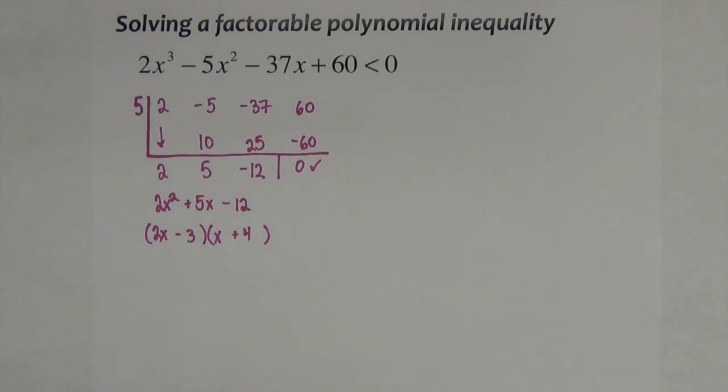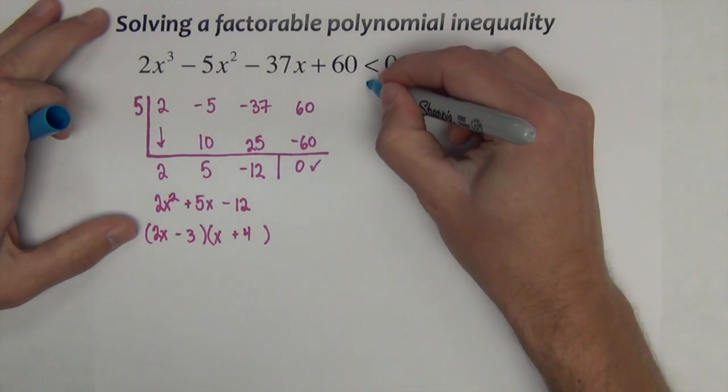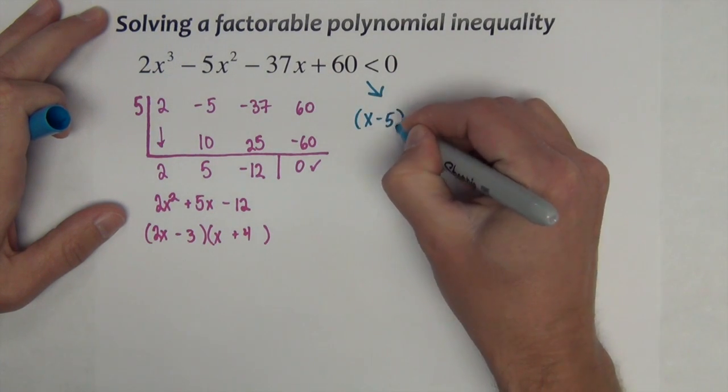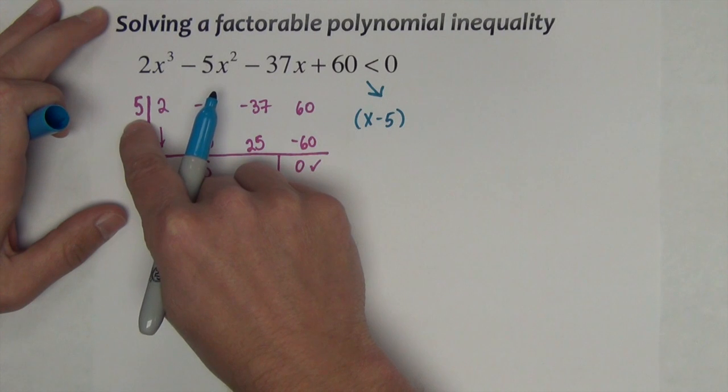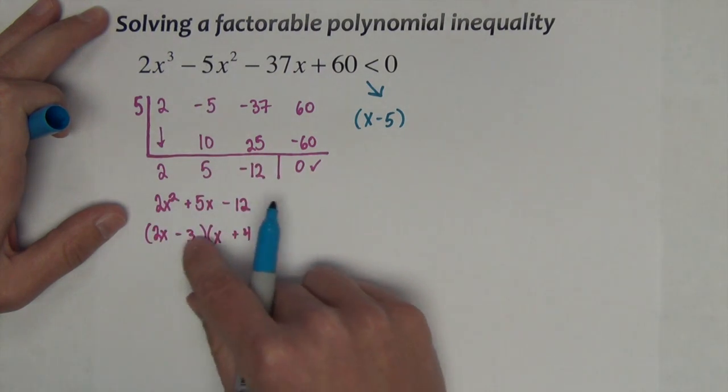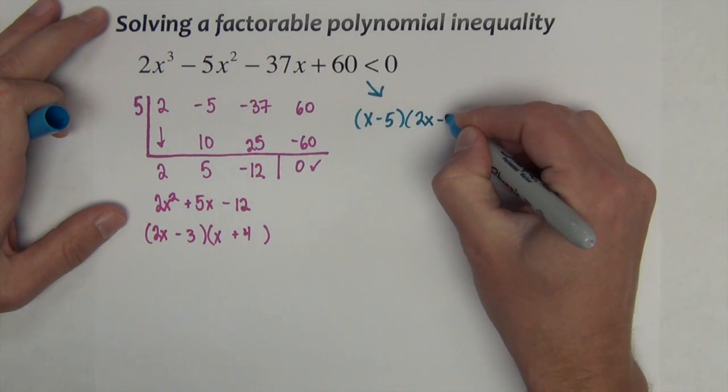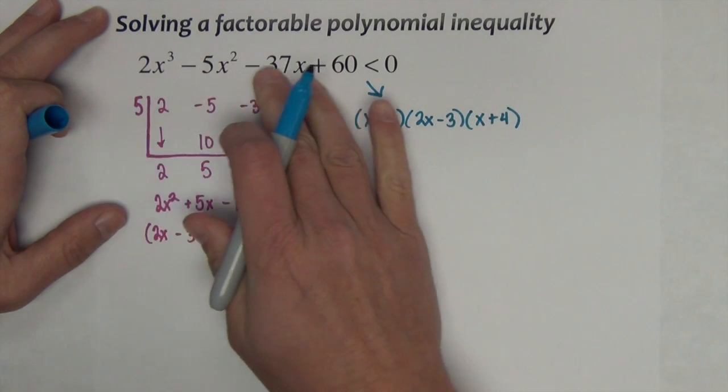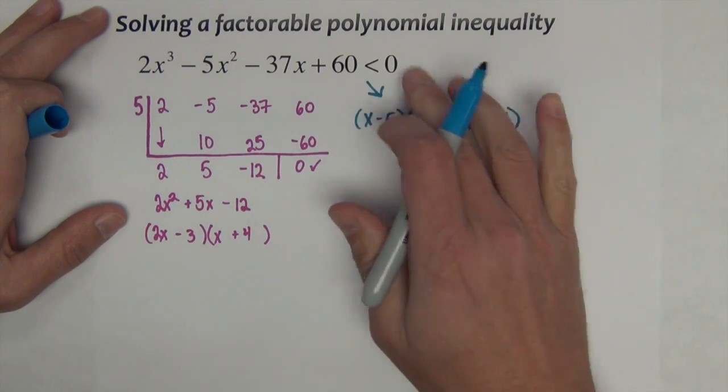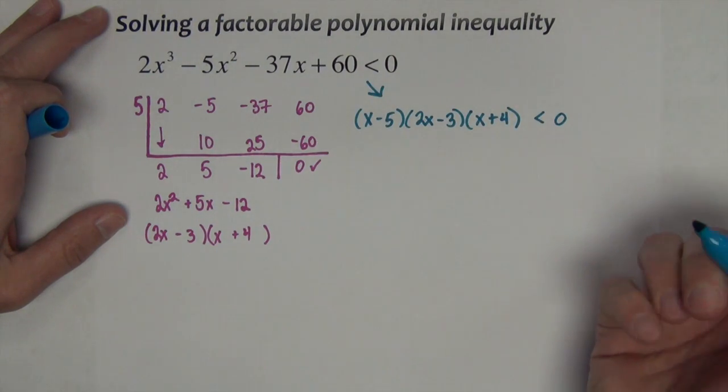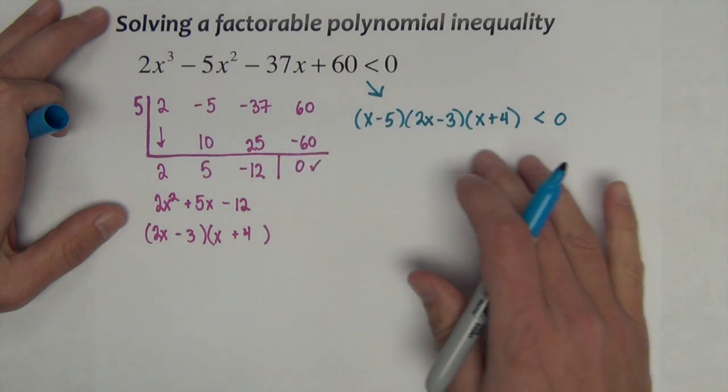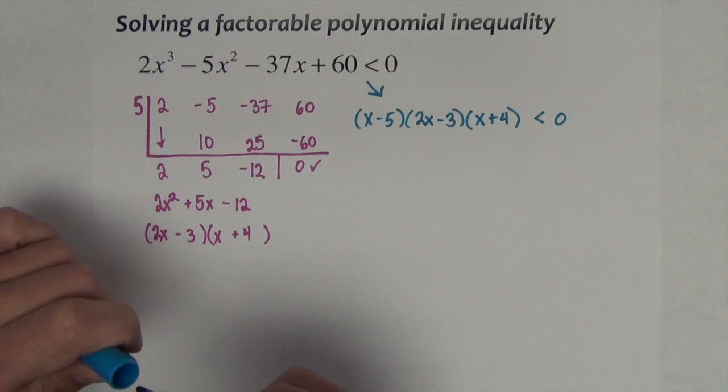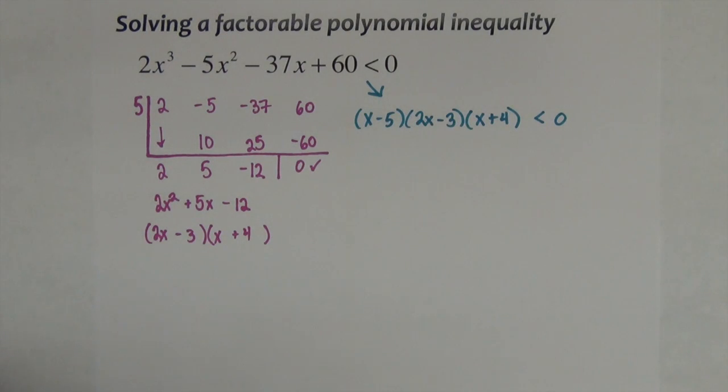2x² is 2x times x. The -12 could be positive 4 and -3, put in such a way that we add to the 5x in the middle. So we've got two of those factors there. We already had the 5 as a zero. So we can now write this problem in factored form. The factored form would be (x - 5)(2x - 3)(x + 4), and we want less than 0.